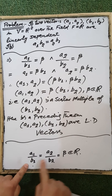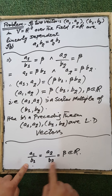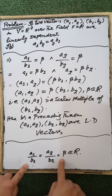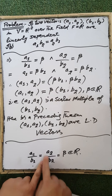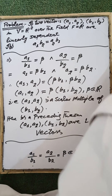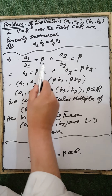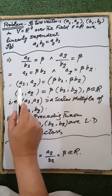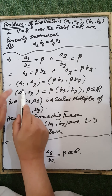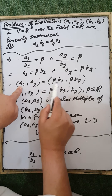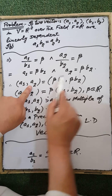So a1/b1 = a2/b2 = beta. That is, a1/b1 = beta and a2/b2 = beta. After rearrangement, a1 = beta·b1 and a2 = beta·b2. That is, the vector whose coordinates are (a1, a2) equals (beta·b1, beta·b2).